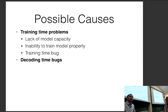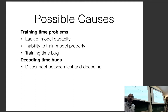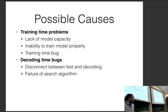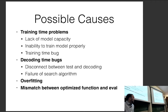The next category is decoding or test time bugs — a disconnect between training and test. It could also be due to failures of a search algorithm. Another category is overfitting, where you're doing well on the training set but poorly on the test set. And finally, there's a mismatch between the function you're optimizing and the function you're finally evaluating on — for example, optimizing likelihood but testing on accuracy. Those are highly correlated but different things.